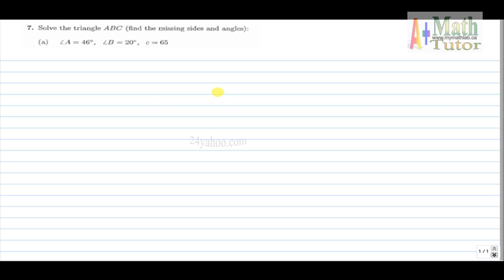Number 7. Solve the triangle ABC, that is, find the missing sides and angles, given in part A, angle A, angle B, and side C.